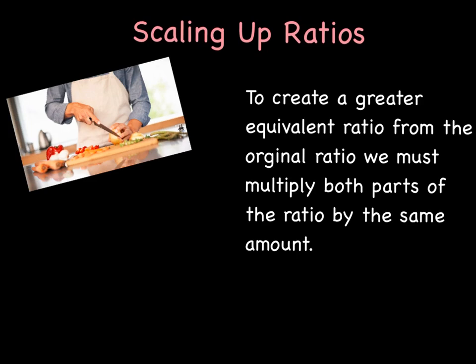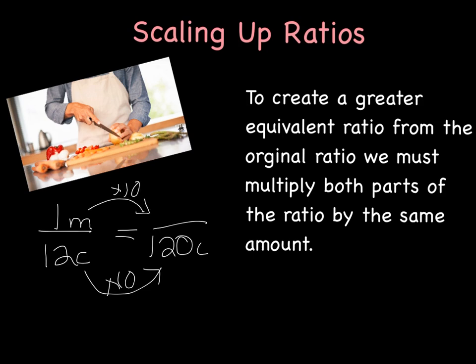To create a greater equivalent ratio from the original ratio, we must multiply both parts of the ratio by the same amount. For example, if I had one cup of milk for every twelve cookies I was baking, but I'm having a get-together and need to make 120 cookies, I would have to decide how many cups of milk I'd need. To get from twelve cookies to 120, that's multiplying by ten. So I would need to do the same to the top - one times ten is ten - so I would need ten cups of milk.